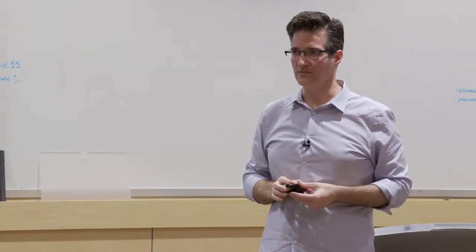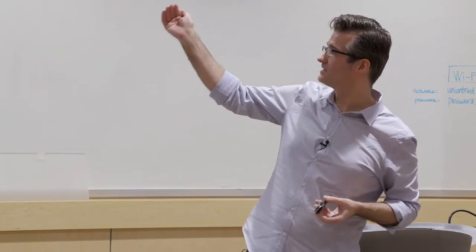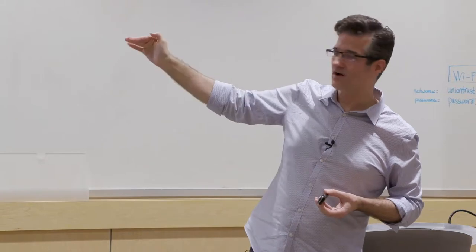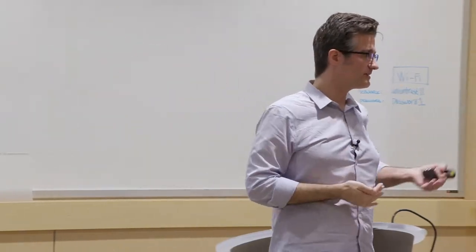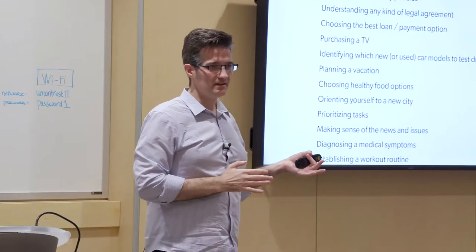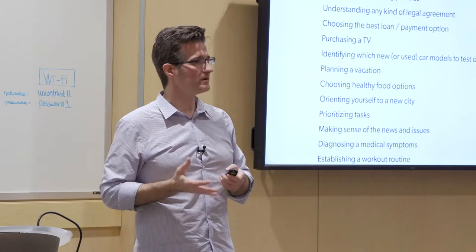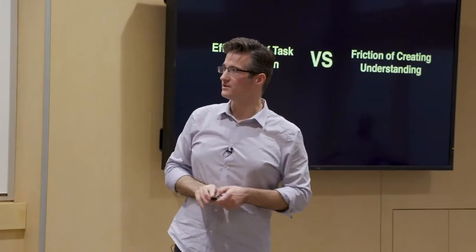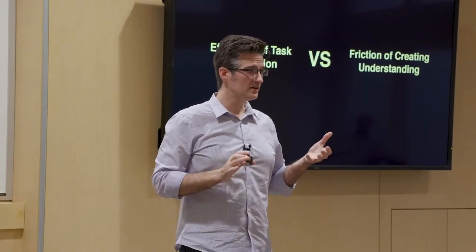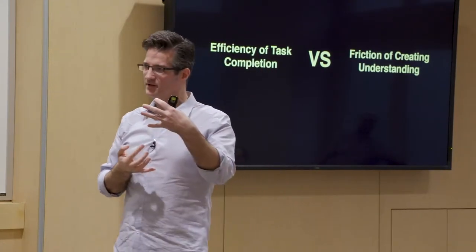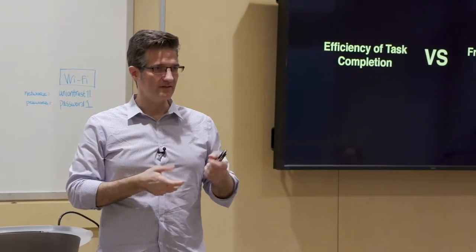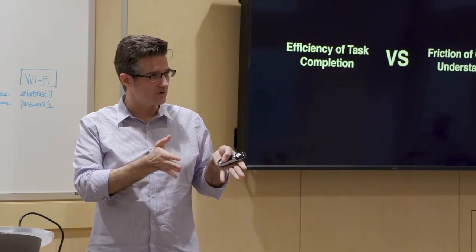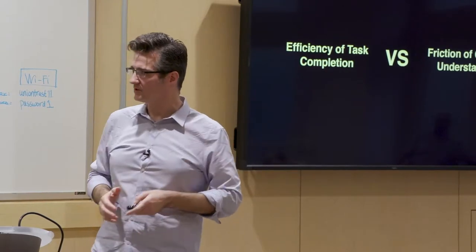I think there are plenty of areas where we're not thinking about it and we're giving this over to algorithms. Choosing the best health insurance plan, understanding privacy policies, understanding any legal agreement, purchasing things like a TV, planning a vacation, choosing healthy food options. There's all these things that I would argue the quick answer is probably not better than helping people form their own understanding and then arrive at that answer. I think this is efficiency of task completion versus introducing friction to create understanding. The warning here is left unchecked, technology will dumb us down in ways that should make us very uncomfortable.